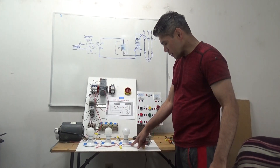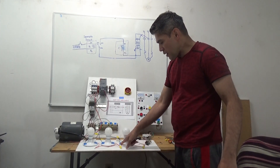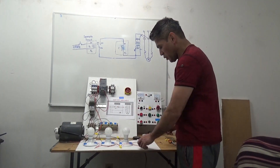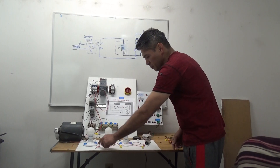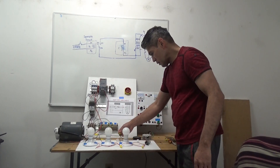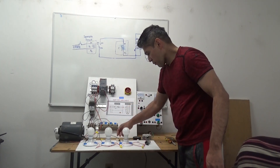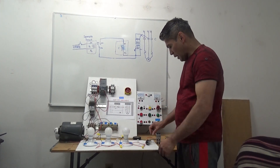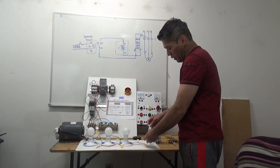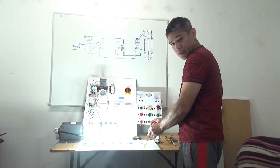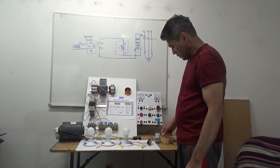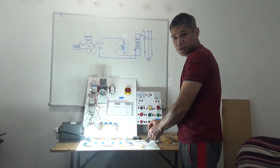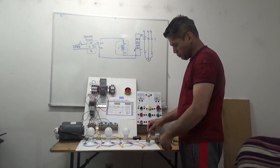We have terminals labeled A and B for each lamp. The A side is for line 1 and the B side is for the neutral line. I connected it to a circuit breaker for safety and also have a switch so we can switch it on and off. When I switch it on, this is what happens; when I switch it off, this is what happens.